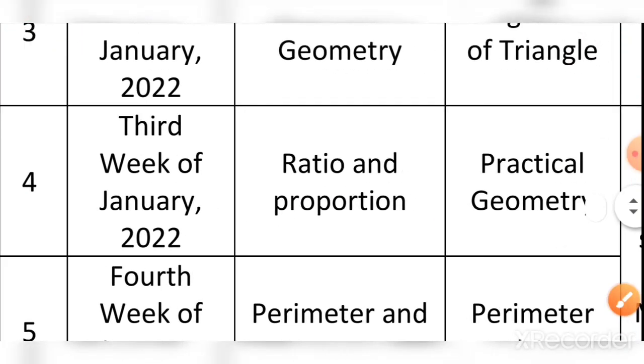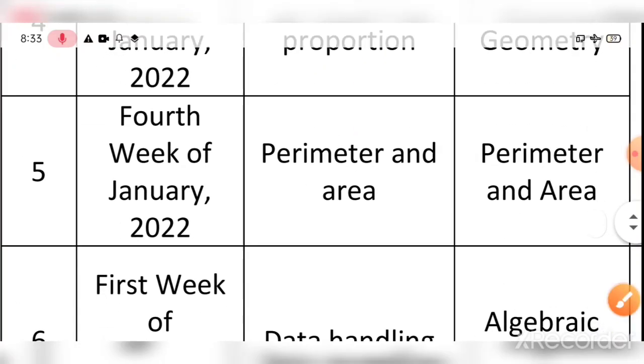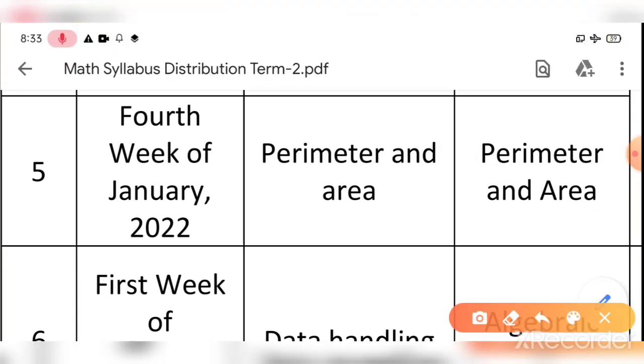Third week: Ratio and Proportion. Fourth week, the last week of January: Perimeter and Area.